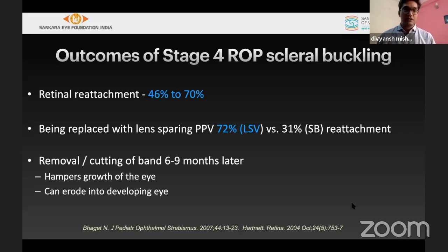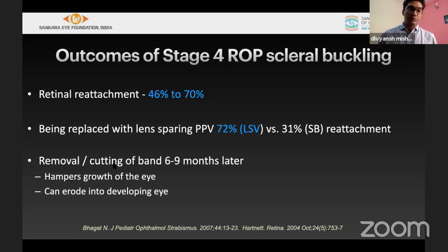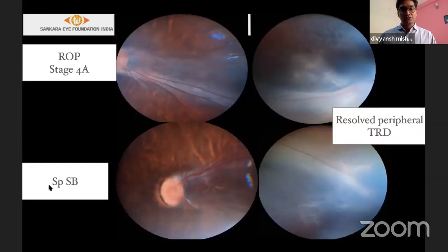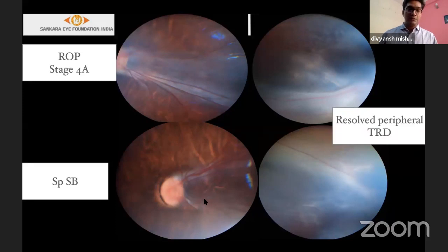Outcomes of ROP scleral buckling show reattachment rates ranging from 46 to 70%. Vitrectomy is now taking over with around 72% success. One disadvantage of scleral buckling is that the buckle must be removed by 6 to 9 months because it hampers eye growth and may cause erosion. However, a major advantage is that cataract formation is avoided. Post-buckle, peripheral traction is relieved and posterior folds settle well.